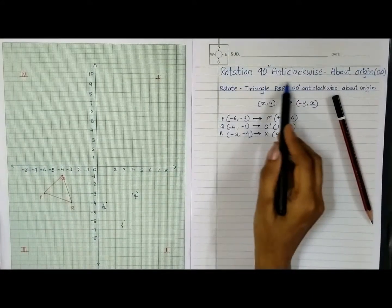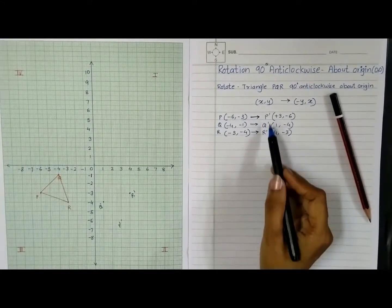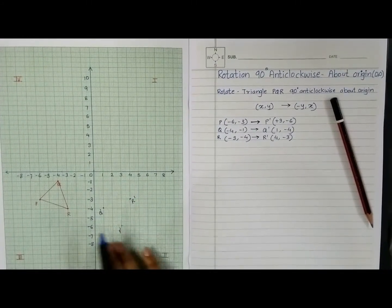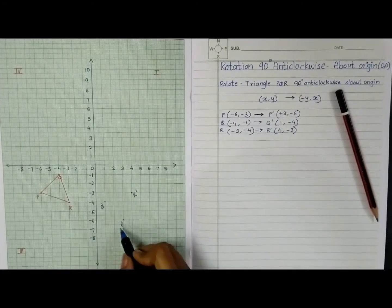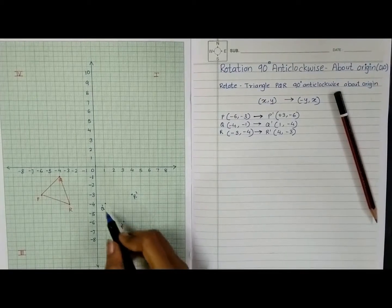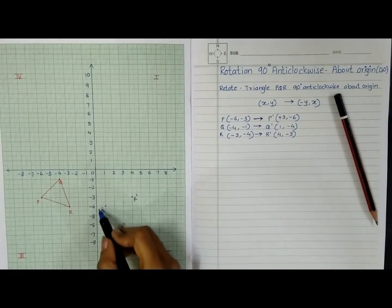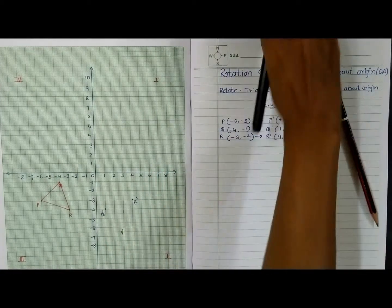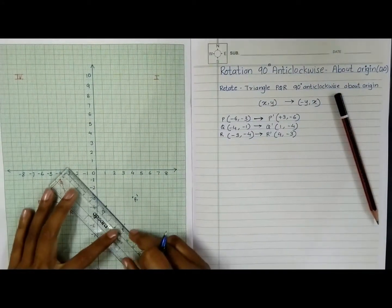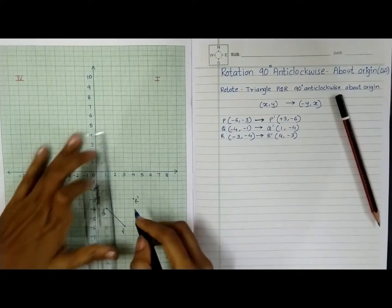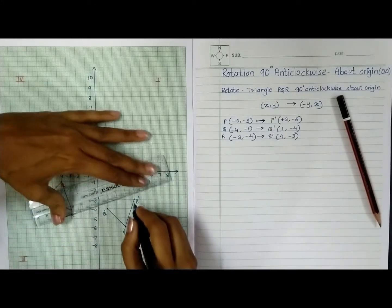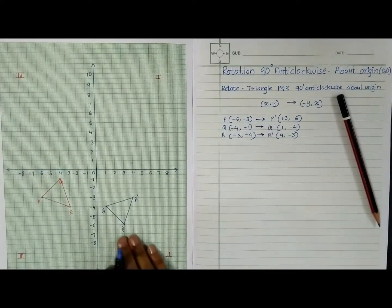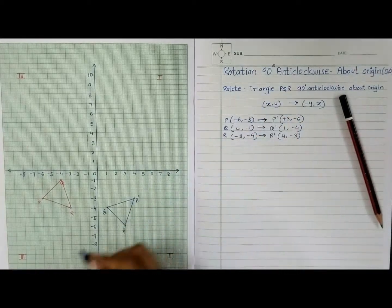After obtaining the three new coordinates P', Q', and R', the next step is to plot them on the graph grid. P' is at (3, -6), Q' is at (1, -4), and R' is at (4, -3). Once all three points are plotted, join them using a ruler and pencil, and your new triangle P'Q'R' after 90-degree anti-clockwise rotation is ready.